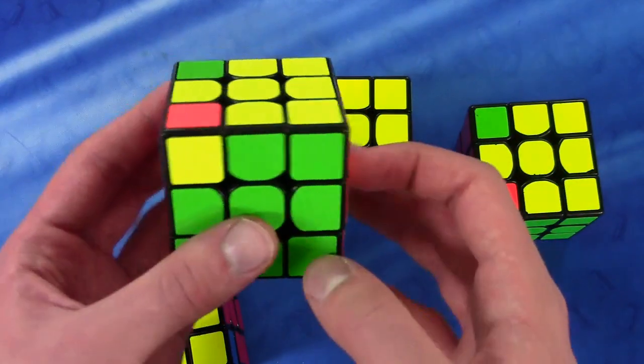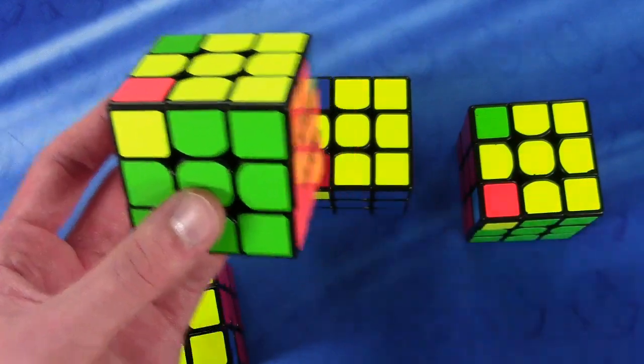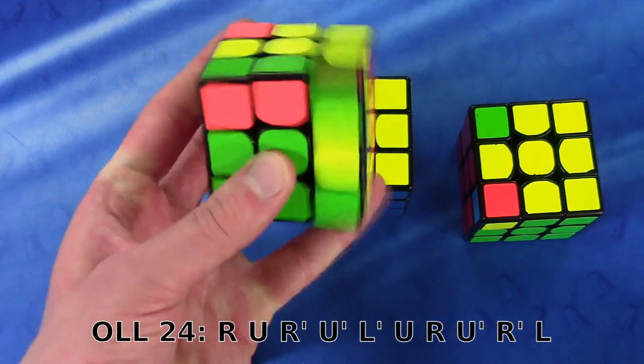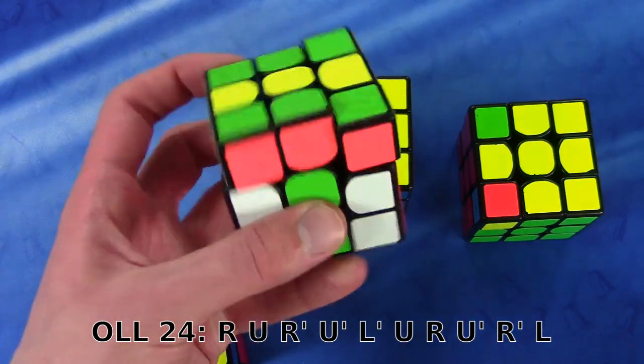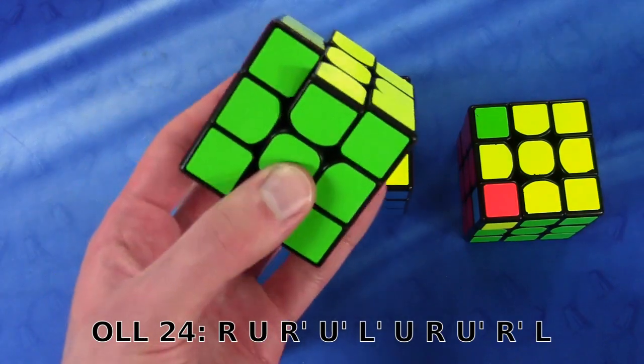So the first one is extremely simple. You simply take the right pair out, do an L', put the right pair back in and then just do the L.